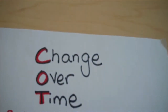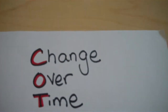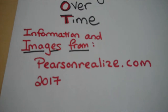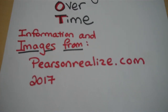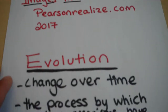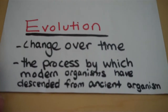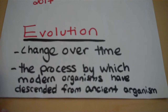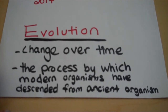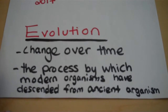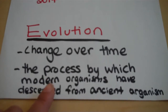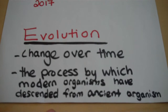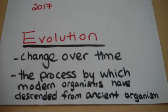Hi. I'm going to do a video about change over time. The information and images come from PearsonRealize.com. The definition of evolution is the change over time — it's the process by which modern organisms have descended from ancient organisms.